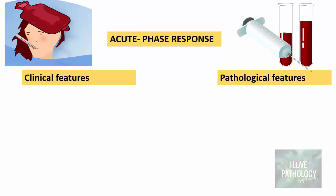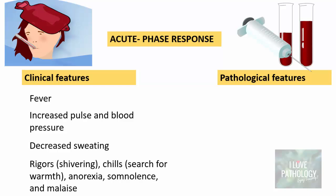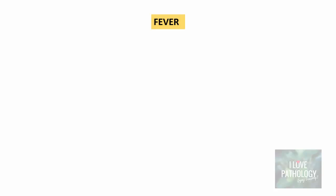The clinical features of acute phase response include fever, increased pulse and blood pressure, decreased sweating, shivering (rigors) or searching for warmth (chills), anorexia, somnolence, and malaise. The pathological features include elevated levels of acute phase proteins, and blood investigations which can show thrombocytosis, leukocytosis, and sometimes in long-standing cases, even anemia. Now, what is fever?